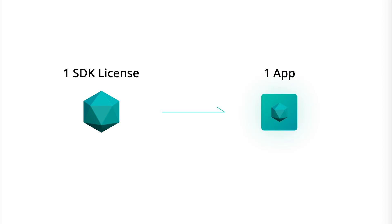Basically, you can build one application with one SDK license, and with each license, you can develop one application for iOS and Android.